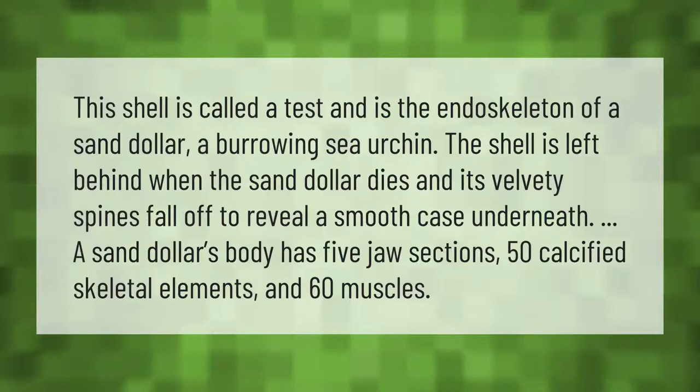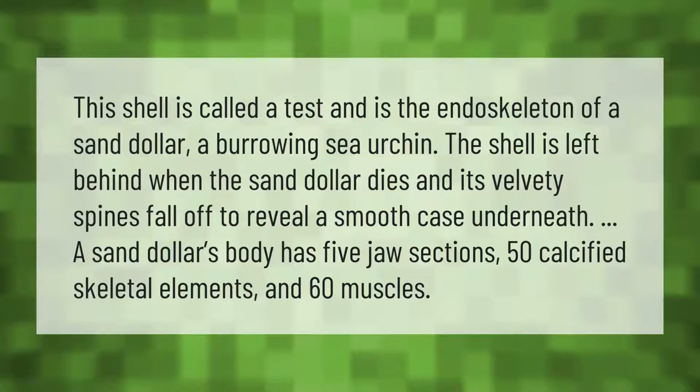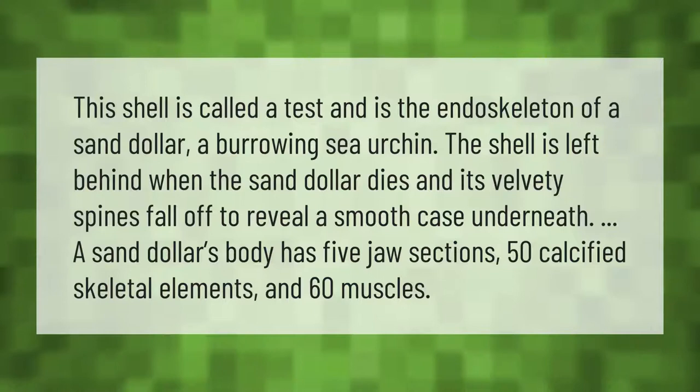This shell is called a test and is the endoskeleton of a sand dollar, a burrowing sea urchin. The shell is left behind when the sand dollar dies and its velvety spines fall off to reveal a smooth case underneath. A sand dollar's body has five jaw sections, 50 calcified skeletal elements, and 60 muscles.